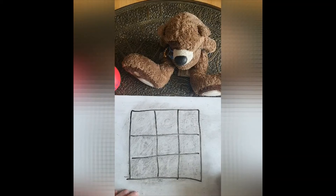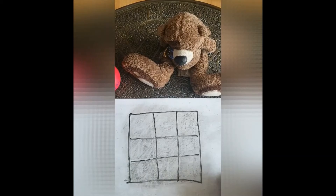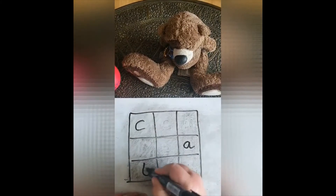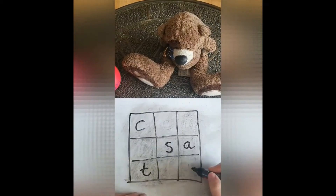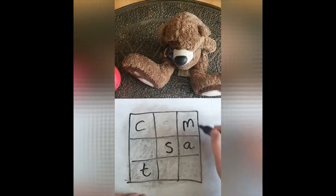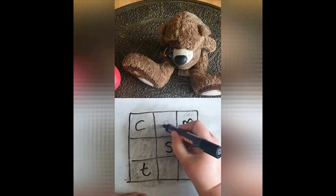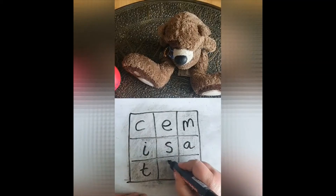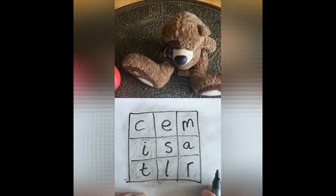I'm going to start with CVC words — consonant, vowel, consonant — just really simple words. What you want to do is split them up in the hope that your child will then find them again. For example, I could do 'cat'. I could then put in an 's' and that could be 'sat', put in 'm' for 'mat', and then add in an 'e' because you could have 'met'. So you're just thinking of lots of different words that your child could make from these letters.